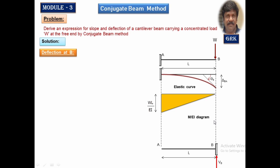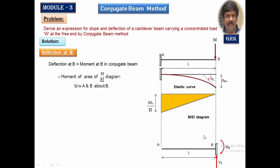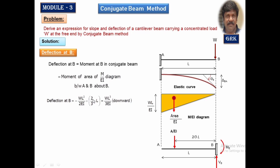Now let us calculate the deflection at B. The deflection at B corresponds to the bending moment in the conjugate beam at B. The load (M/EI diagram area) acts at a distance of two-thirds of the length from the fixed end. The CG of this area lies at distance 2L/3 from the fixed end. The deflection equals the moment of the M/EI area about B, which is minus WL²/2 times 2L/3, giving minus WL³/3EI. The negative sign indicates downward deflection.